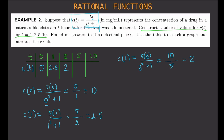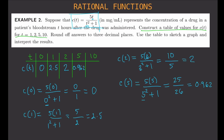How about C of 5? C of 5 is equal to 5 times 5 all over 5 squared plus 1, which is 25 over 26. The decimal representation of this fraction is 25 divided by 26, which is 0.962. So we put 0.962 in the table.